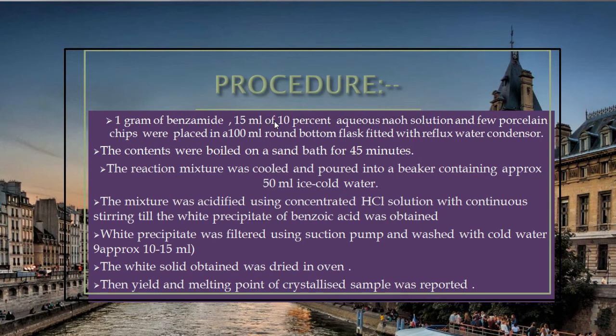The mixture was acidified using concentrated HCl solution with continuous stirring until a white precipitate of benzoic acid was obtained. The white precipitate was filtered using a suction pump and washed with cold water. The white solid was dried in an oven, and the yield and melting point of the recrystallized sample were recorded. The compound must be dry to obtain an accurate melting point.